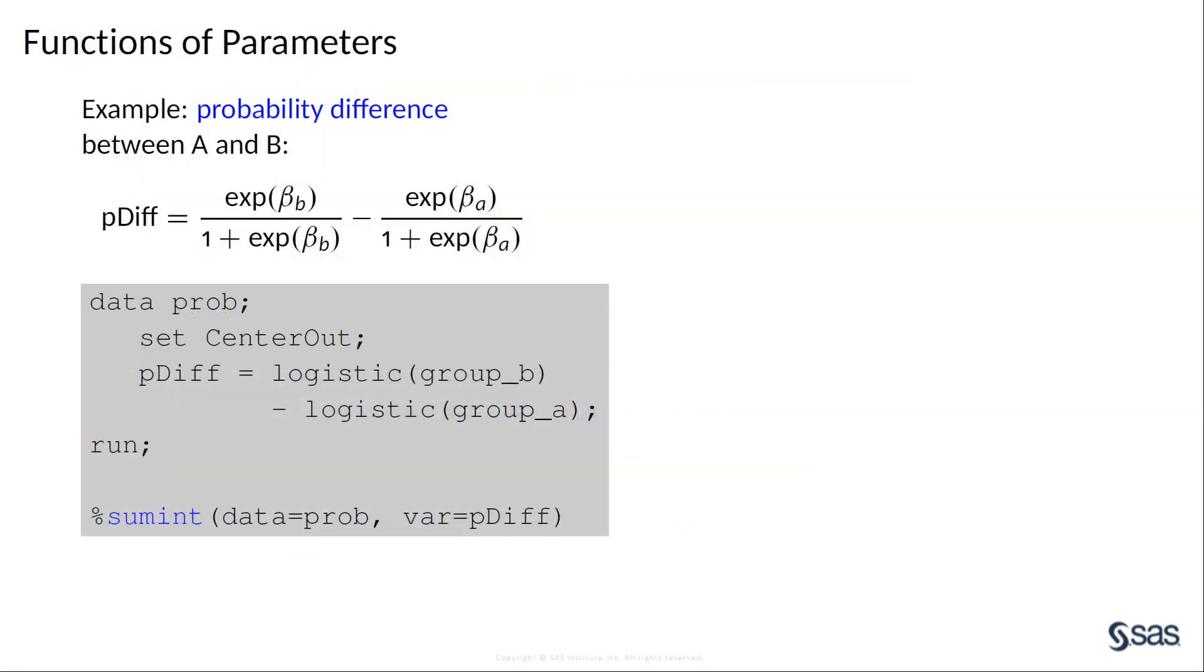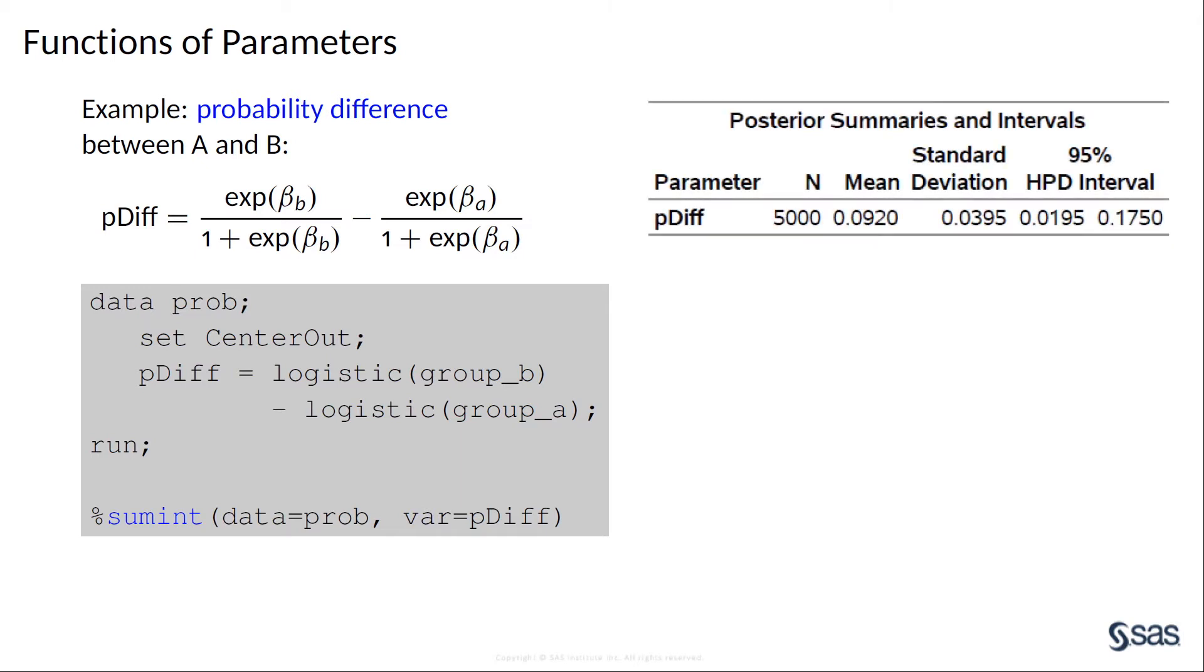You can also compute nonlinear functions. For example, if you want the probability difference between the two groups, you can use the data step to derive the probability difference and save it to the variable pdiff, and then you can use the Bayesian macro sumint to obtain the summary statistics.